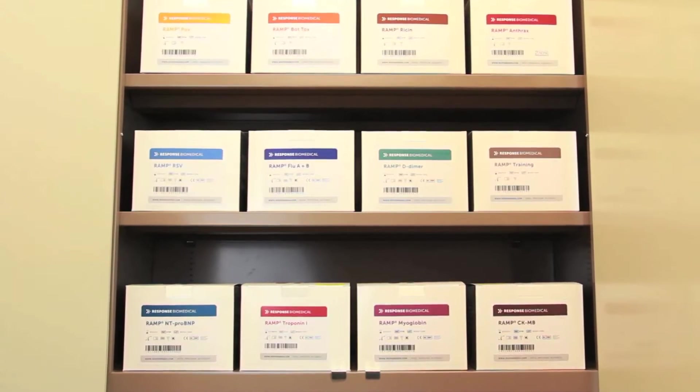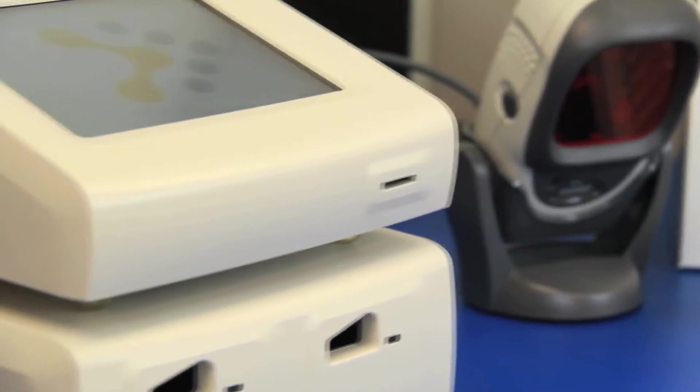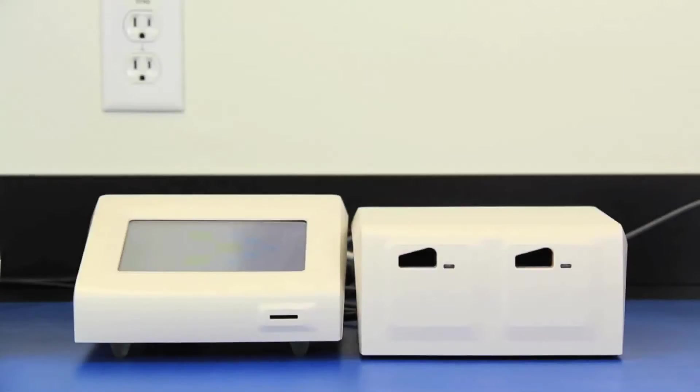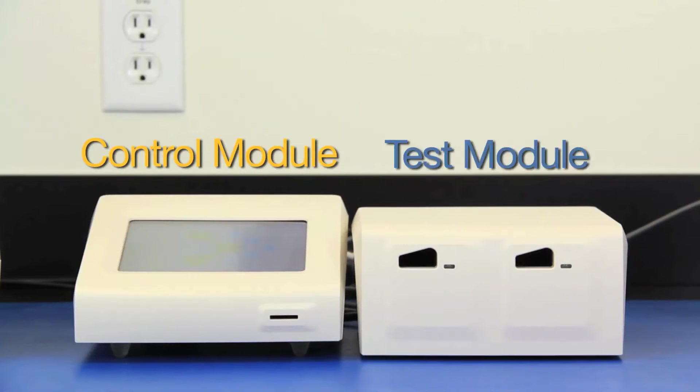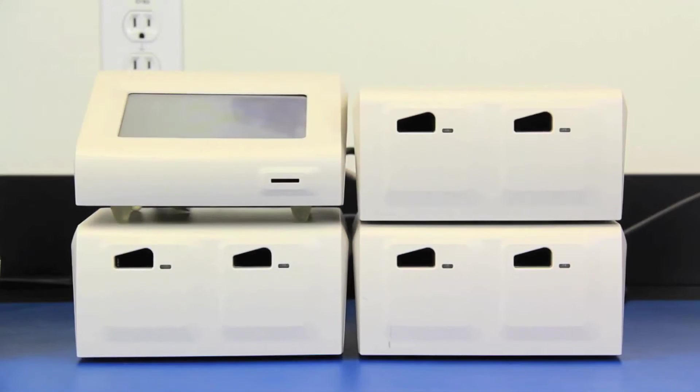In this presentation, we will discuss the main benefits of the RAMP 200 and demonstrate how easy it is to run a RAMP test in three simple steps. In its basic configuration, one control module can be attached to a single test module to run two tests in parallel, or it may be expanded to run up to three test modules, or six tests simultaneously.